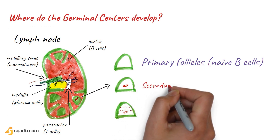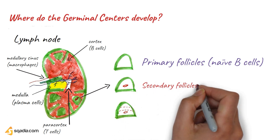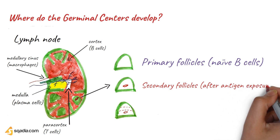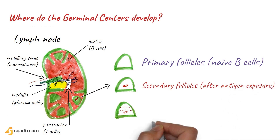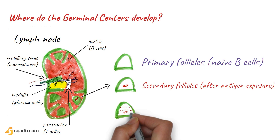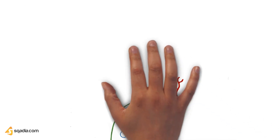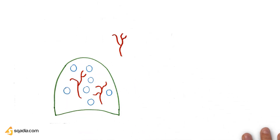This structure inside the lymph node is called a follicle. Follicles can be primary — meaning immature, containing naive B lymphocytes not yet in contact with an antigen — or secondary follicles, formed after exposure to an antigen. The small red circle is called the germinal center, formed from rapidly dividing cells after antigen stimulation.